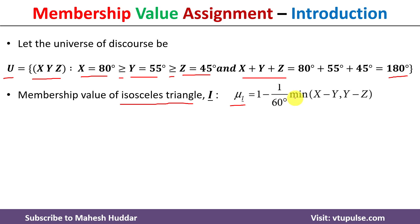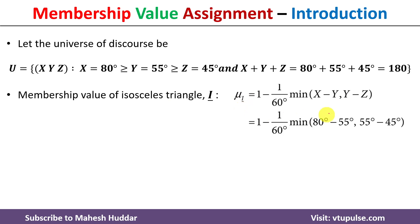We know the values of x, y, and z, so we substitute them into this equation. Putting x = 80 degrees, y = 55 degrees, and z = 45 degrees into the formula.